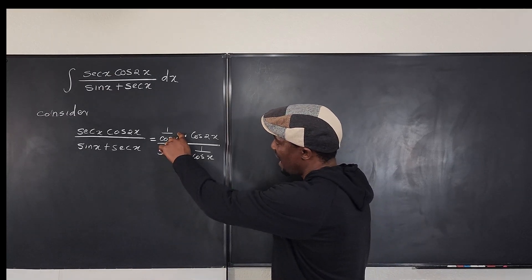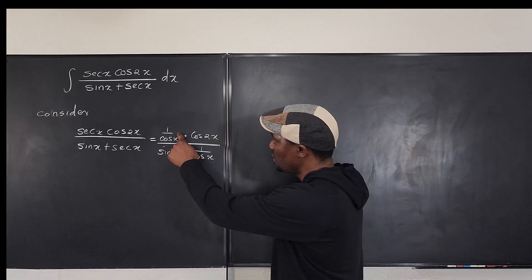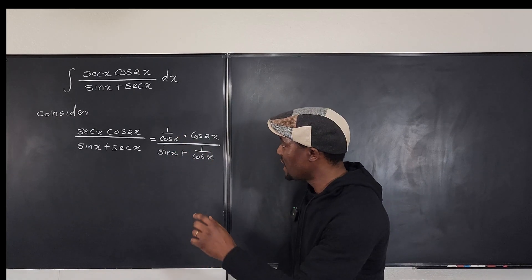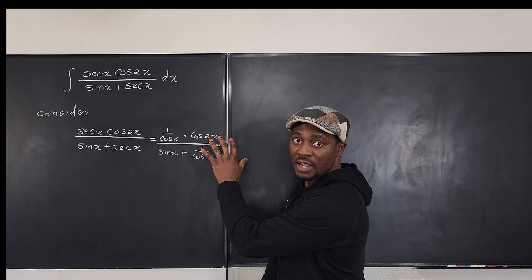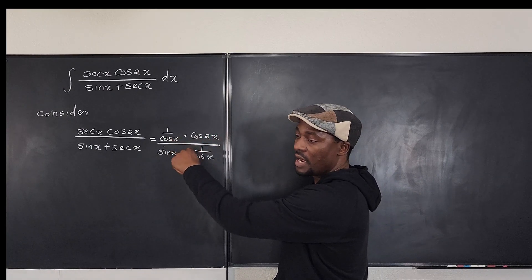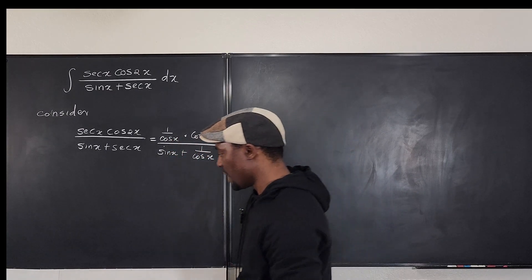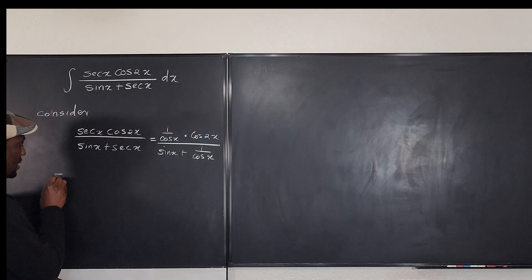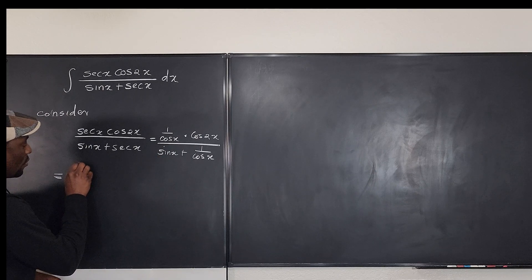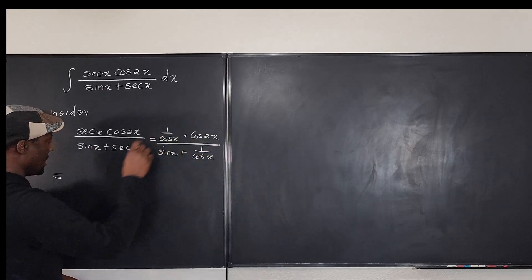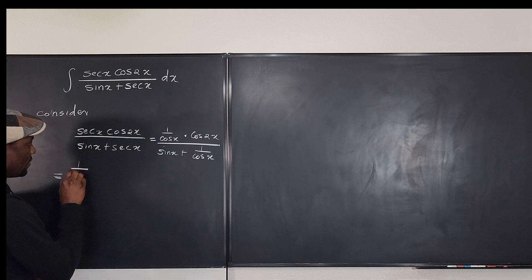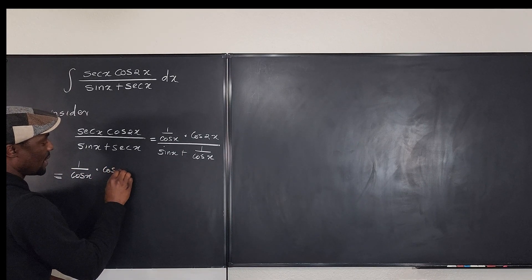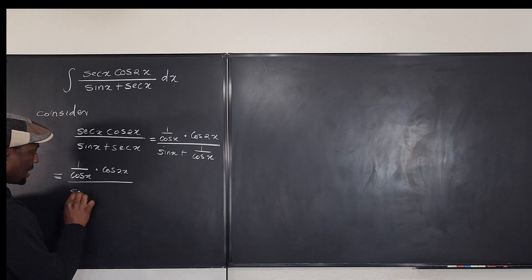This is a fraction within a fraction, so I'm going to multiply the top and bottom by cosine x to get rid of the two cosines. Multiplying through by cosine x gives: (1/cosine) · cosine 2x over (sine x + 1/cosine x) — multiplied top and bottom by cosine x.